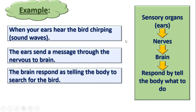Let's take an example: when your ears hear a bird chirping. How does the nervous system work? First, the sensory receptors of the ears take the sound waves, which is the message. Then the message goes from the nerves to the brain, and the brain makes a response and tells the body what to do.